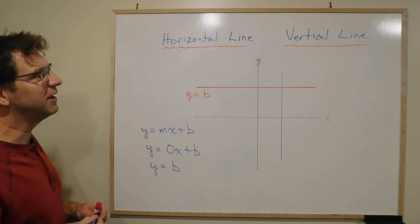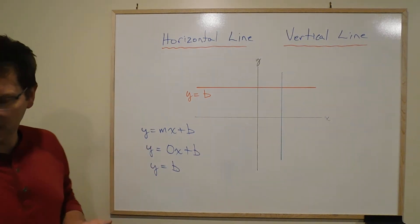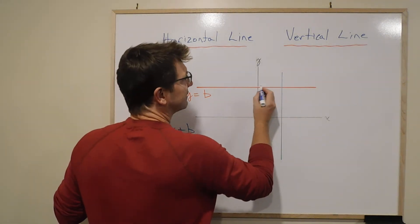So really the b is the y-intercept, wherever it crosses. Let's just say for argument's sake it crossed at 7.